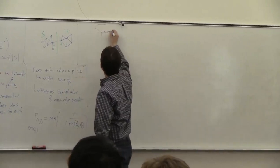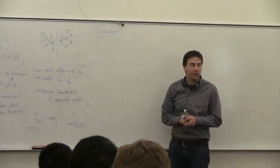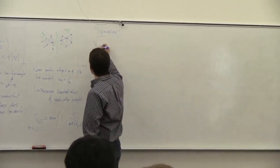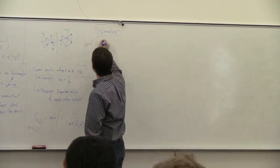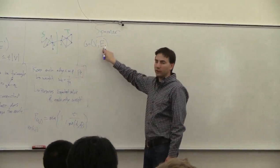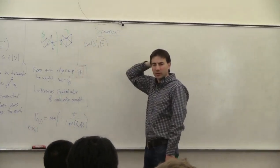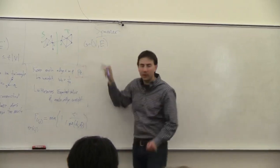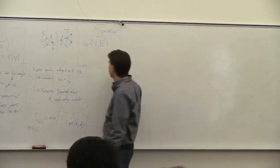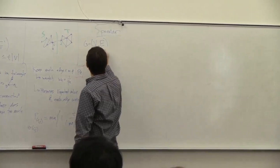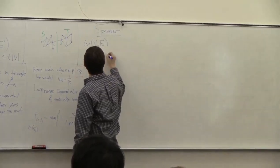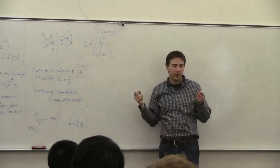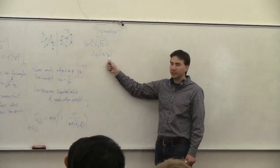A spanner is based on where we have some sort of metric defined on all the vertices. You've got some graph with vertices and edges. Sometimes you think of having all edges between all pairs of vertices, with some distance defined between every v1 and v2. We're going to try to preserve this distance while making the graph sparse.